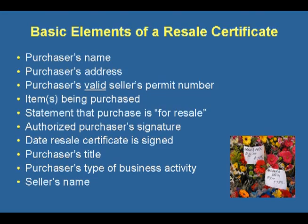For a resale certificate to be complete, it must contain the purchaser's name and address, the purchaser's valid seller's permit number, a description of the property being purchased, a statement that the property being purchased is for resale, and the resale certificate must be signed and dated by the purchaser. If the purchaser does not have a seller's permit number, the purchaser should indicate a valid reason why they do not have a seller's permit. Although not required, it is generally a good idea to also include the purchaser's type of business activity, the title of the person signing the resale certificate, and the name of the seller.